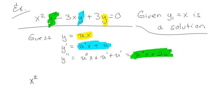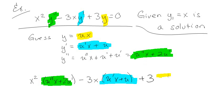So I have x² times green stuff, and that's going to be u''x + 2u', minus 3x times blue stuff, which is u'x + u, and then plus 3 times yellow stuff, which is ux. And that has to equal 0.